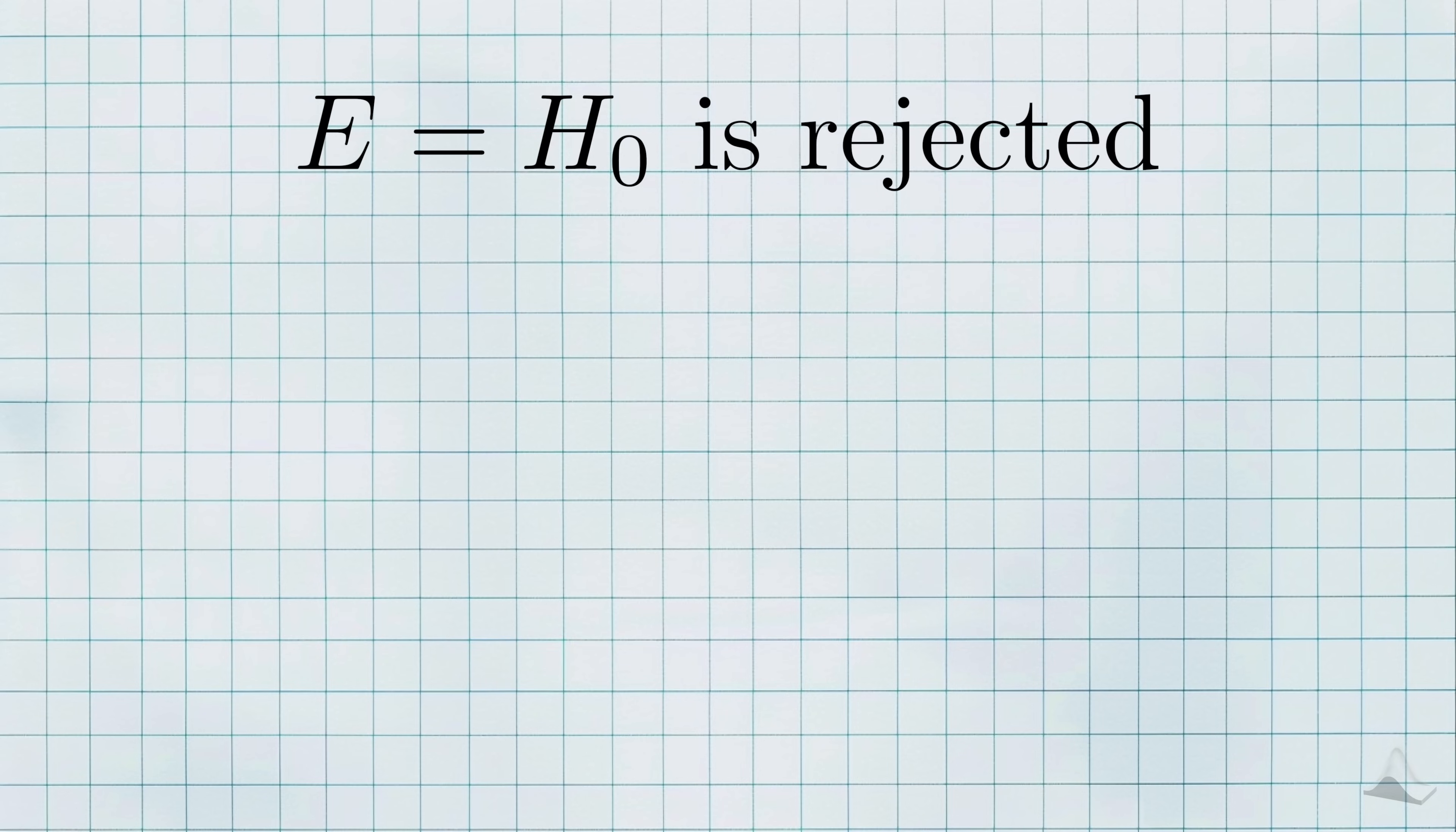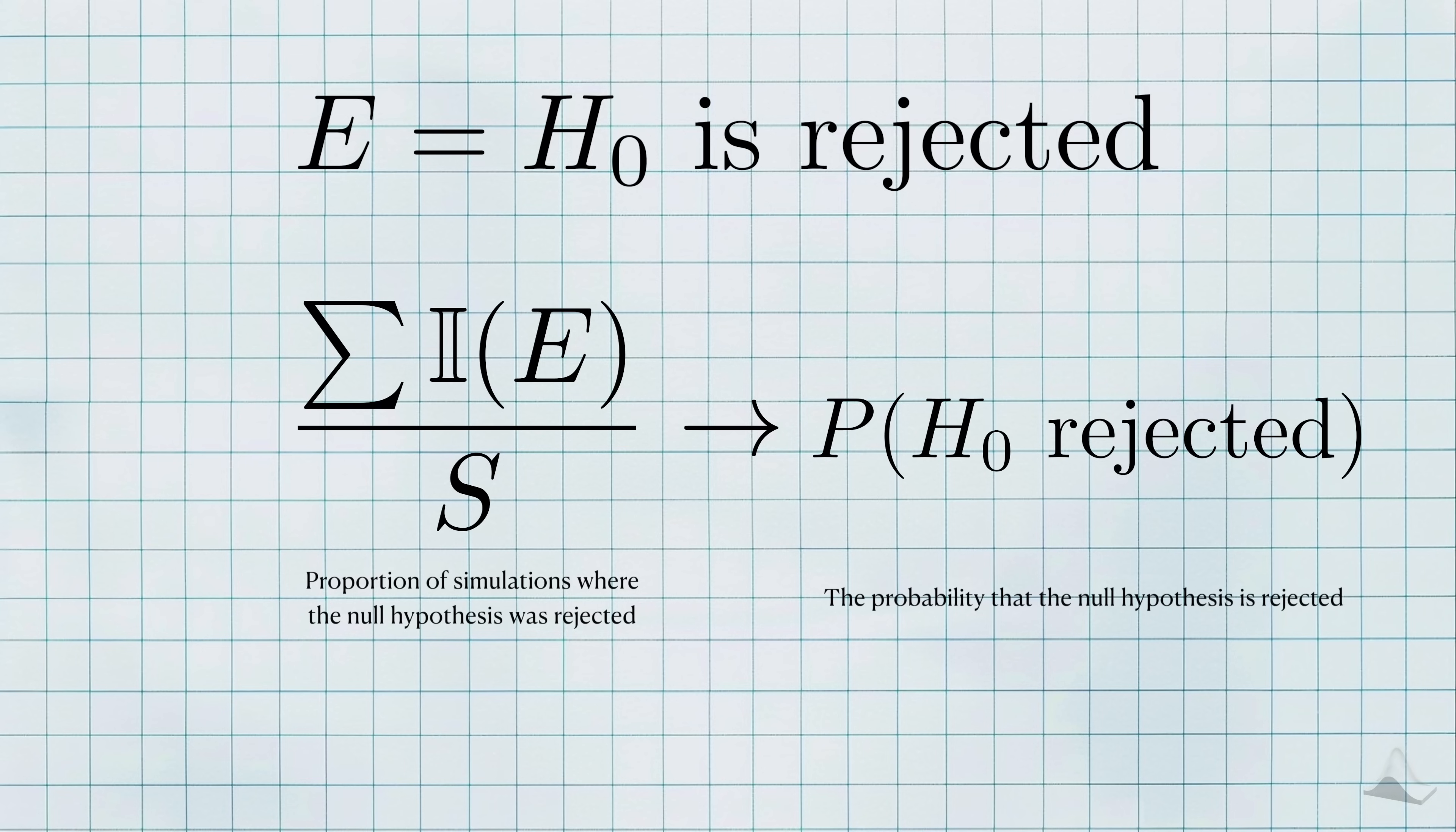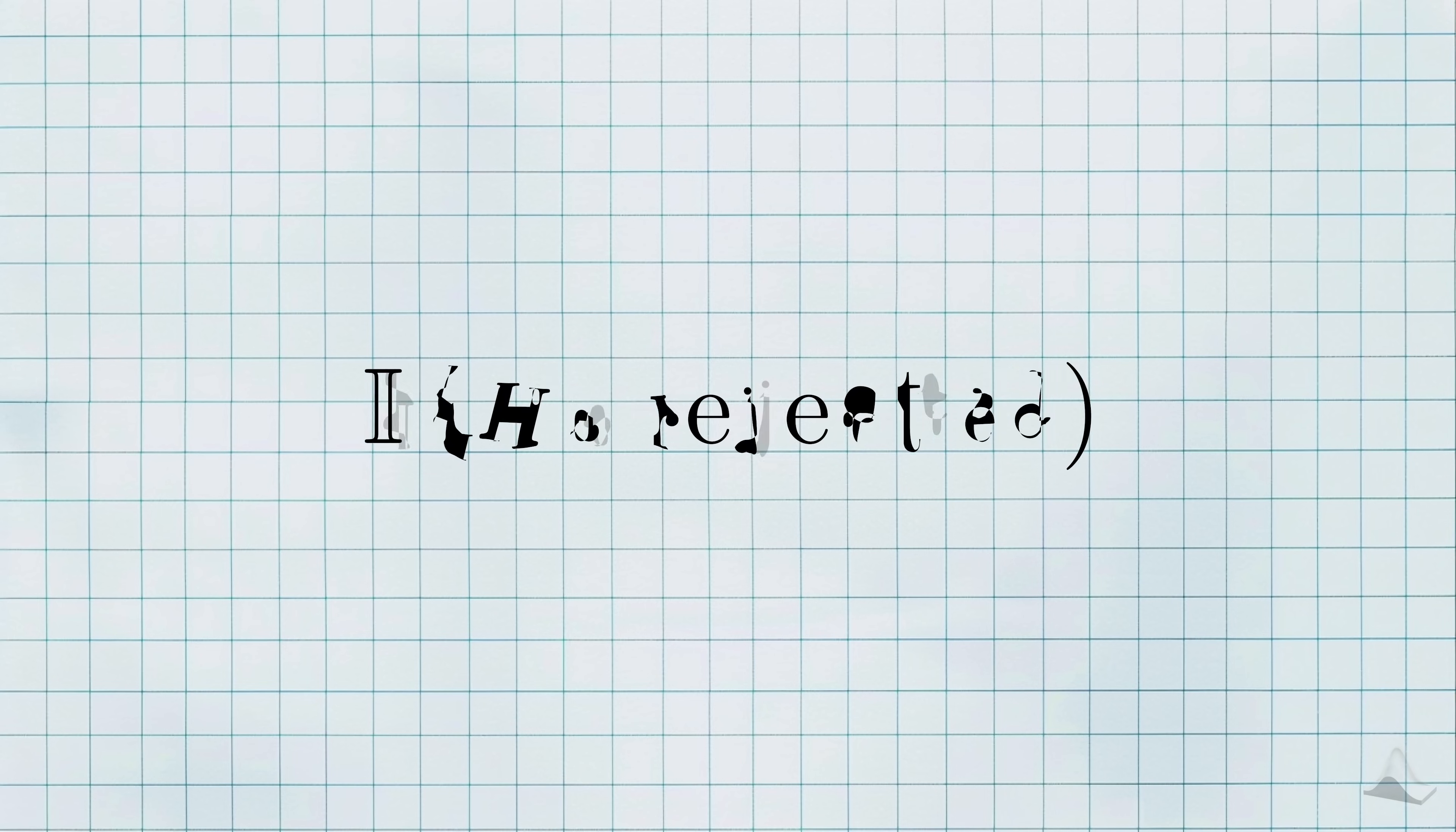In our context, the event that I'm interested in is the null hypothesis being rejected. If I run these simulations and take the proportion of all the indicator variables I produce, I'll get an estimate for the probability of rejecting the null hypothesis. Here's the key. This indicator can also be interpreted as a conditional indicator.